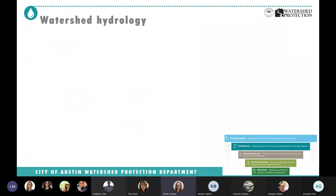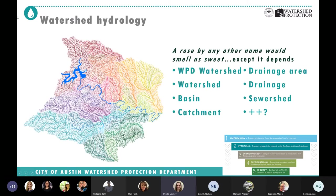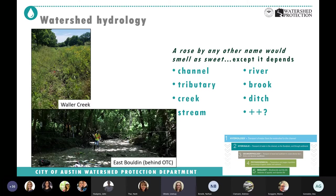I wanted to start with the idea of what a watershed is. Someone asked me the other day at what point do we have a watershed — what size makes a watershed? We have capital WPD watersheds like Decker Lake and Gilliland, but a watershed can be as small as runoff off your roof or as big as Onion Creek. People use different words: watershed, catchment, drainage area, sewer shed — it's helpful to be mindful of scale and terminology.